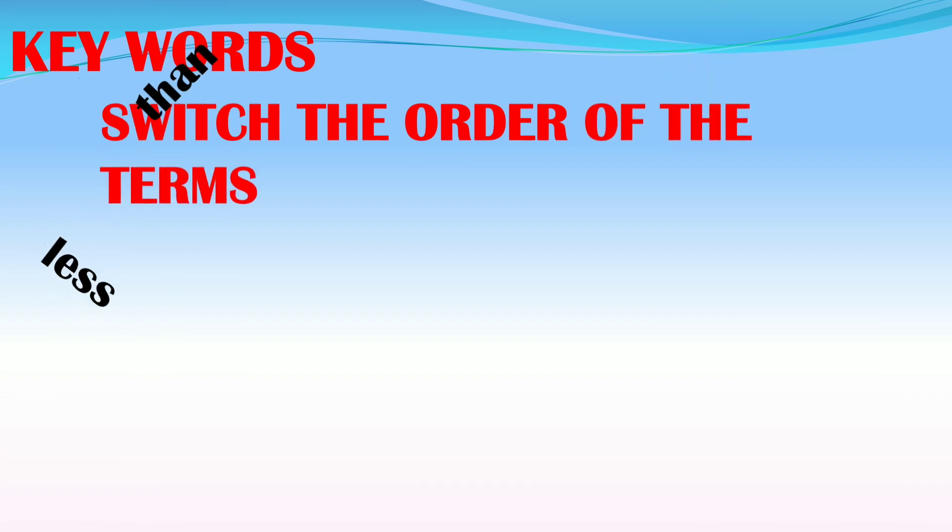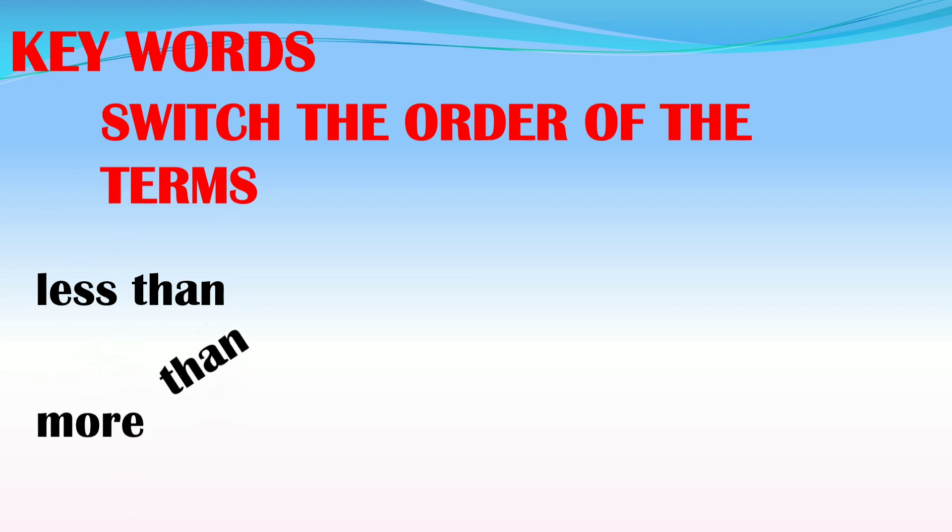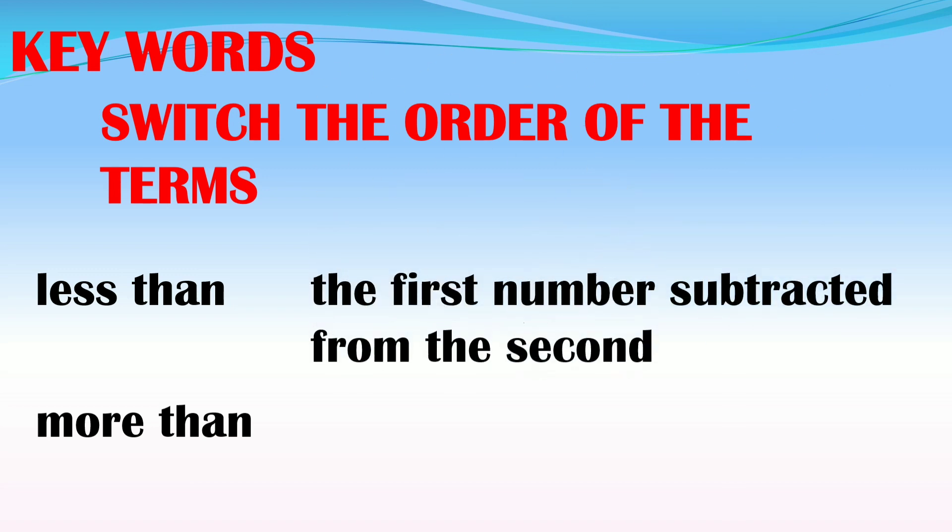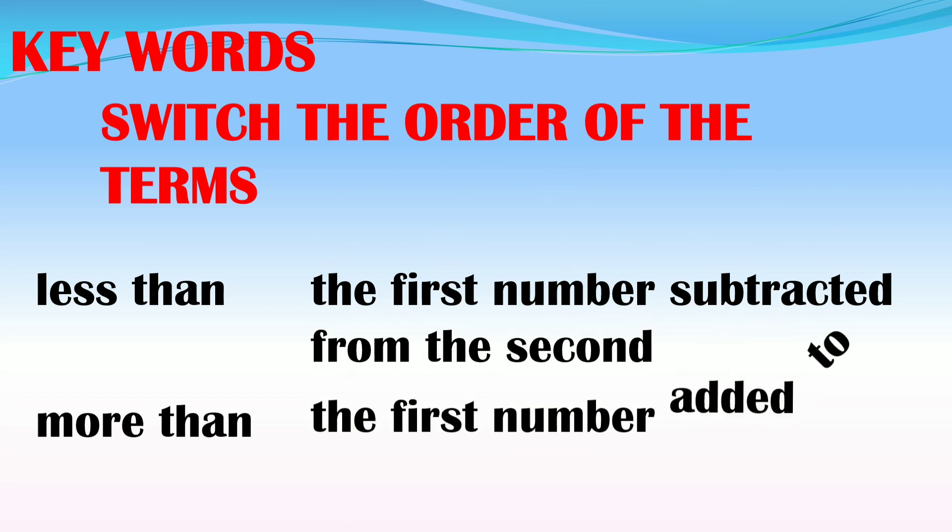There are keywords where we switch the order of the terms. When our terms use 'less than' - that's subtraction - and 'more than' is addition. For less than, the first number is subtracted from the second, so in the statement the first number mentioned is subtracted from the second, so we reverse them. For more than, it's the same - the first number is added to the second. We'll give examples later so you understand better.